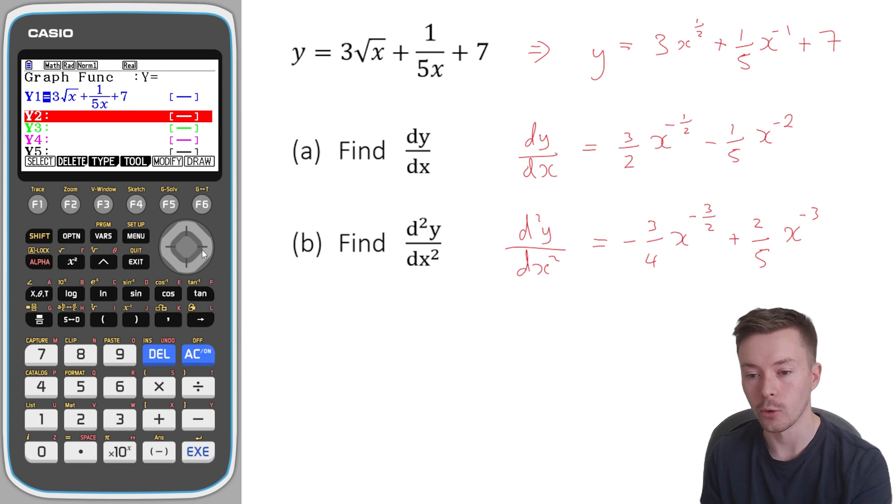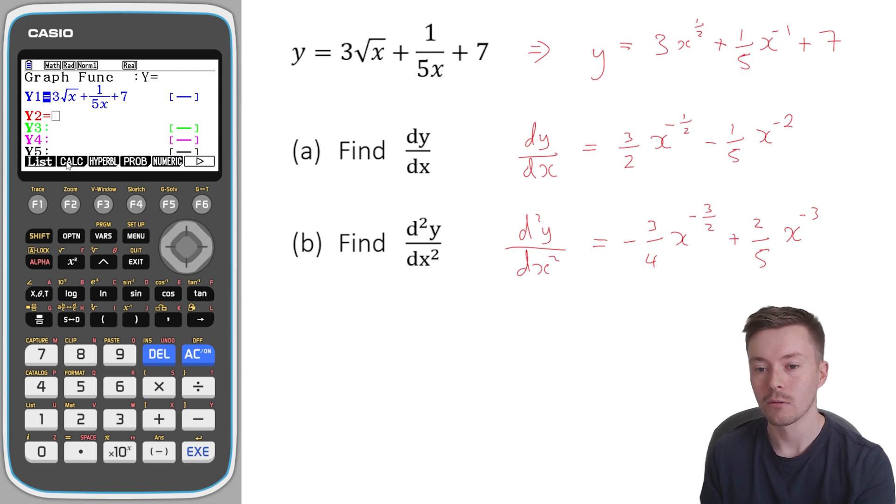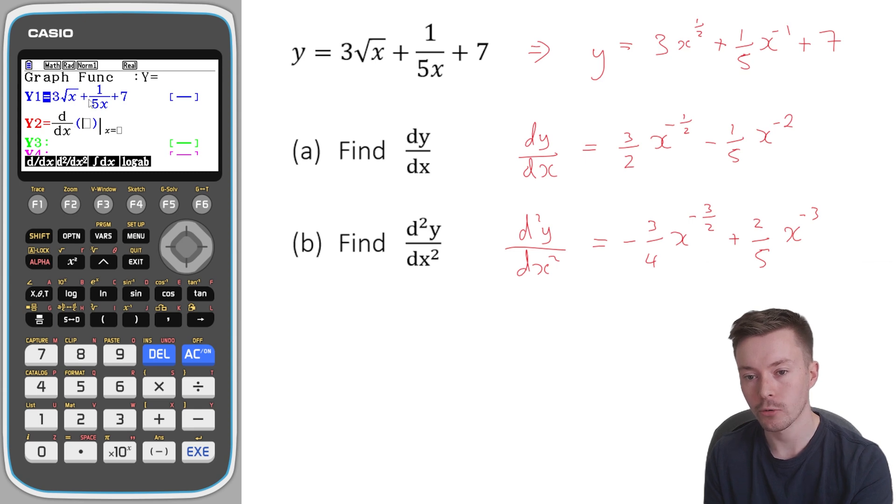Now for y2, my second function, what I'm going to do is I'm going to press options and it will come up with this list of options here. Now if you don't already know this, pressing the button underneath will select the option just above it. So if I press f2, I'm going to get calculate. And then I can calculate the differential, the second differential, the integral and the log of a b. Now what I want to do, I want to do the first differential. So I'm going to press f1. Now I get this notation here. Now I could retype in all of this, but I don't really want to do that. So I'm going to press exit twice.